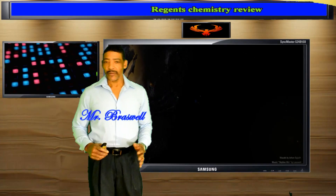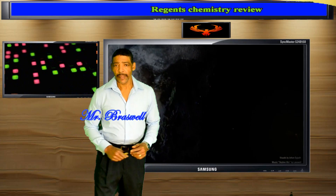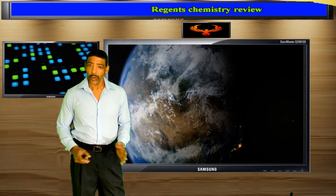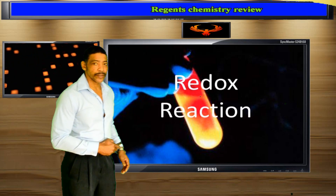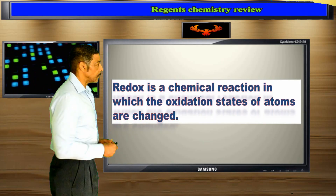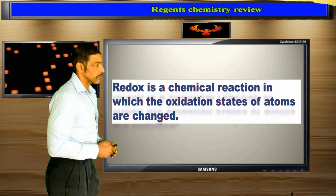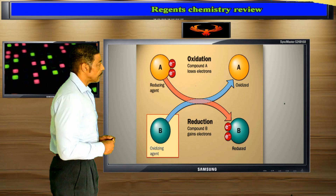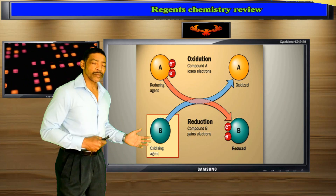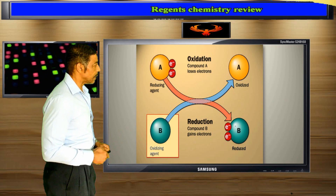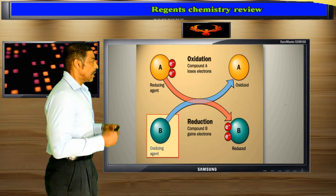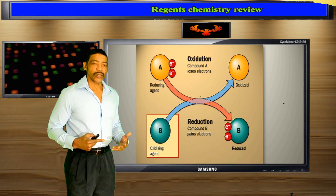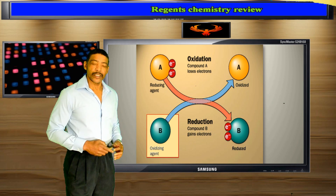Hi, welcome to Redox Chemistry Review. I'm Mr. B. During this lesson I will review oxidation reduction, or redox, reactions. Redox is a chemical reaction in which the oxidation states of atoms are changed. Any such reaction involves both a reduction process and a complementary oxidation process. These two concepts involve the transfer of electrons from one substance to another substance.